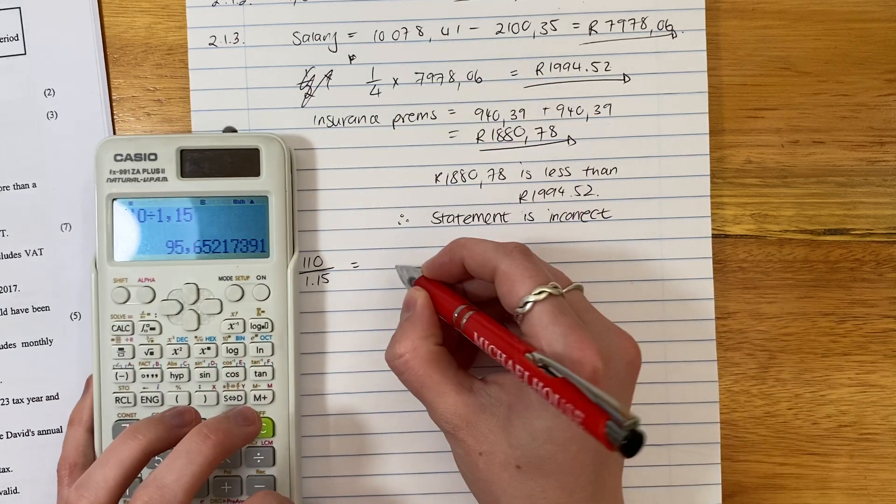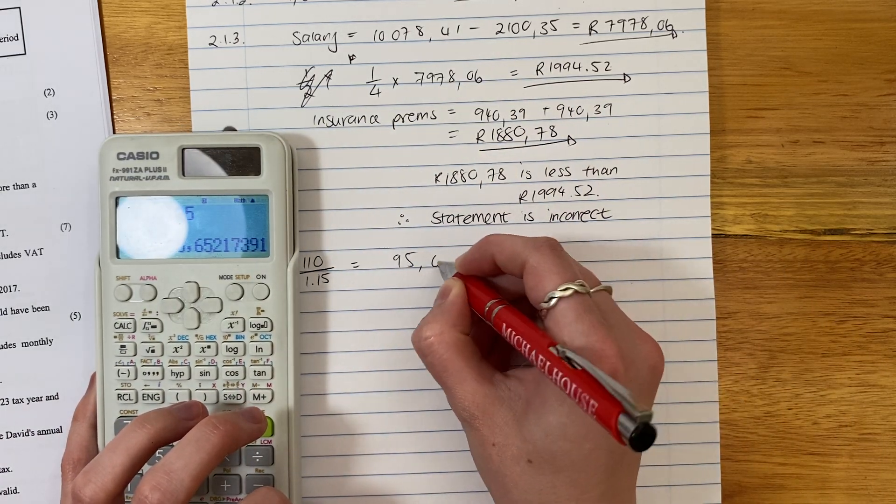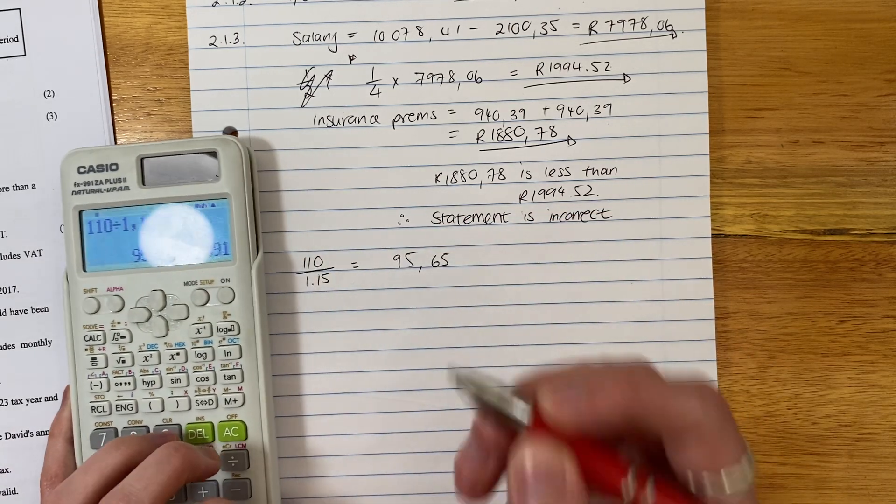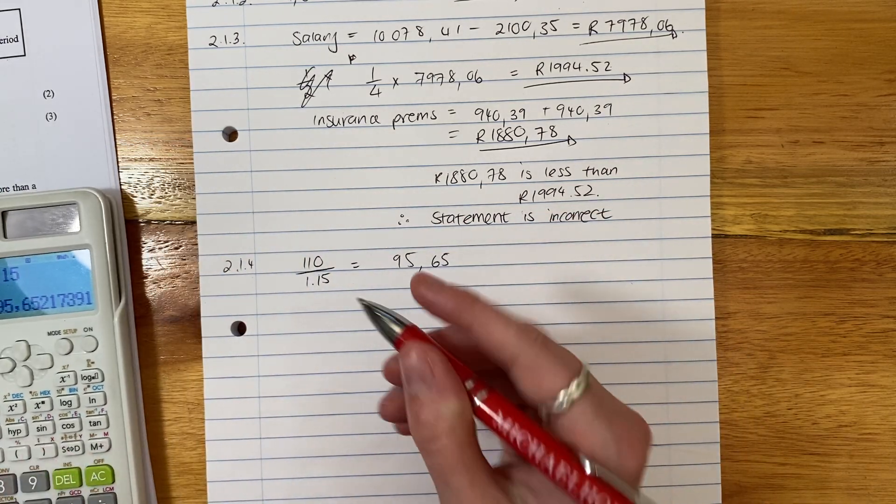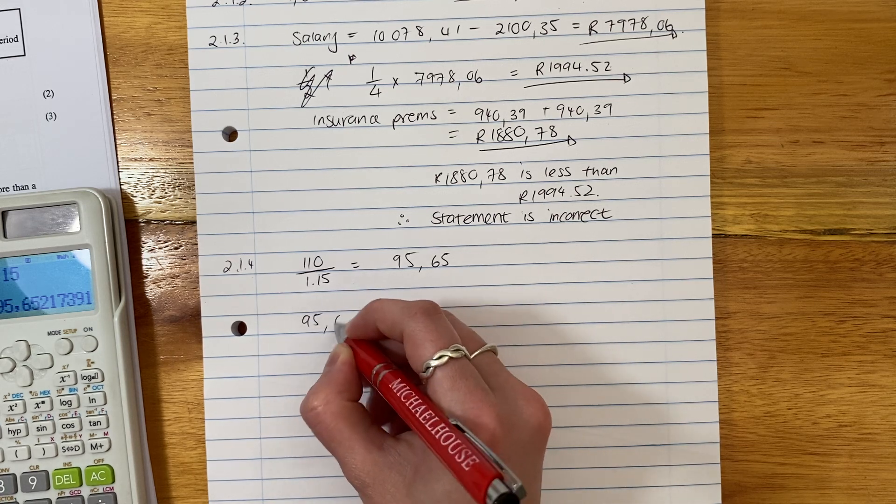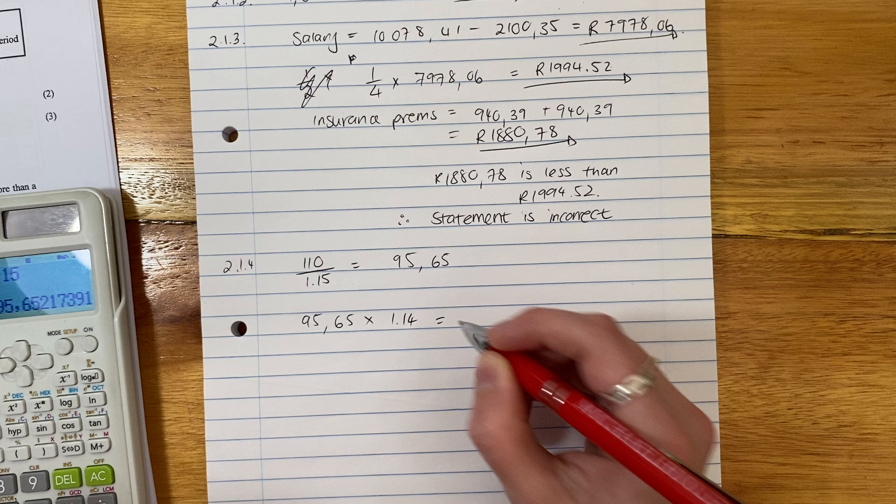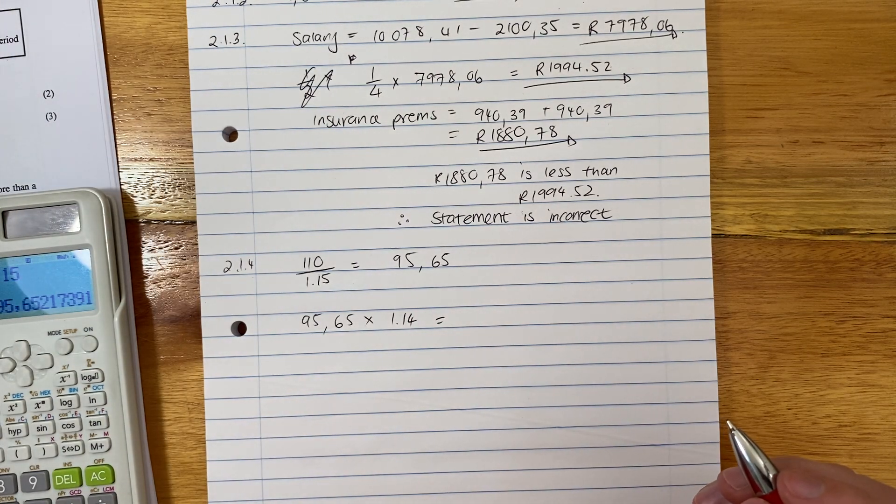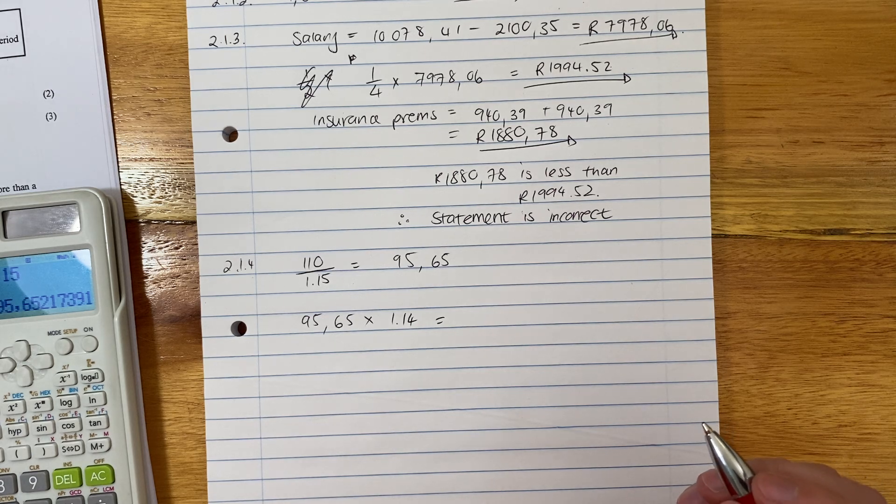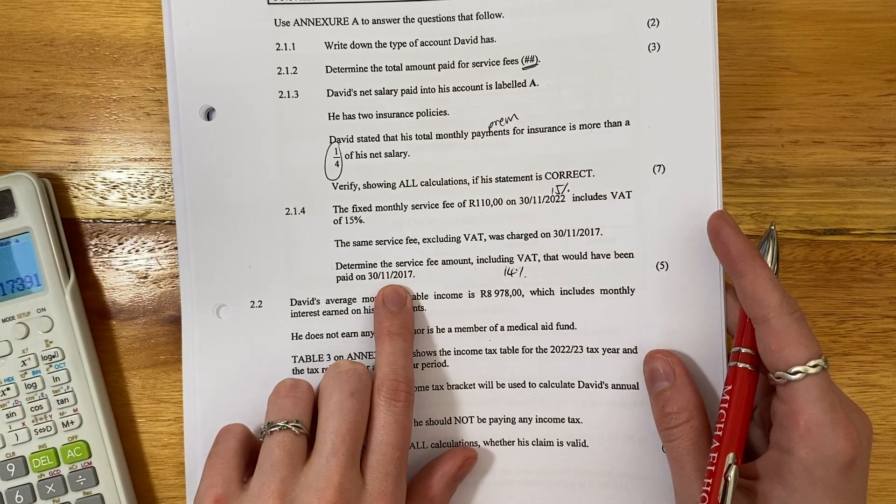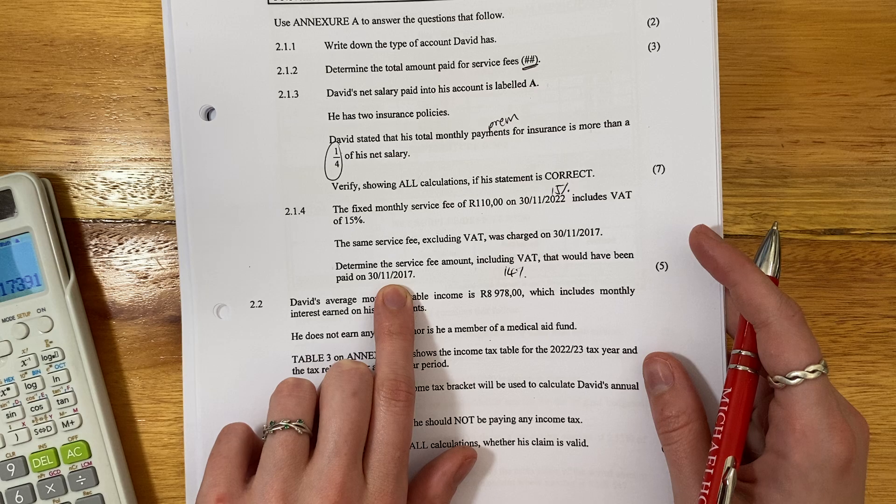And so the price without VAT is this. You can keep all the numbers in there. I'm just going to put it like that. Well, now we have to take that amount and we have to multiply it by 1.14, right? Because that is our VAT rate that applied in the year 2017. And that's the thing that students always get wrong.